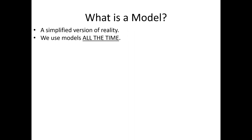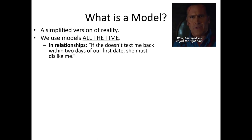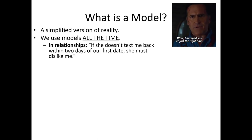So first of all, what is a model? When we say the word model, we simply mean it's a simplified version of reality. Literally, when you think about what a model is in common language, it is always a simplification of something real out there in the world. And we use models all the time in our lives — like in relationships, some people have intuitive if-then rules about how dating operates, about whether or not someone likes you. These are simplifications of reality.